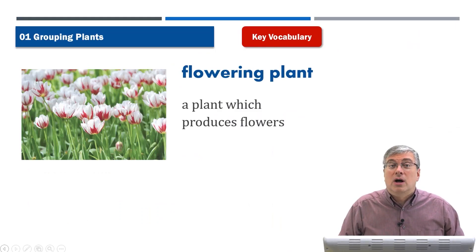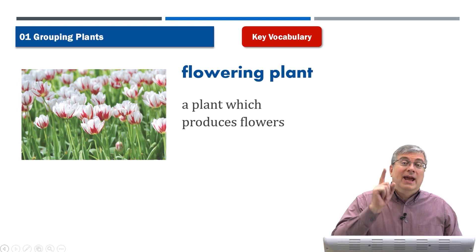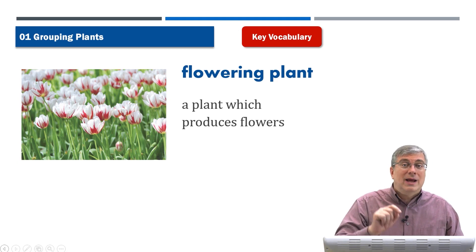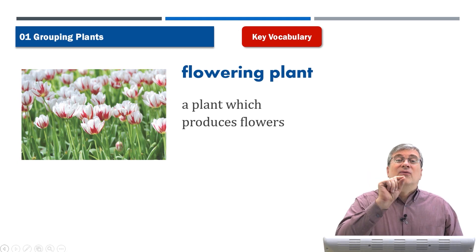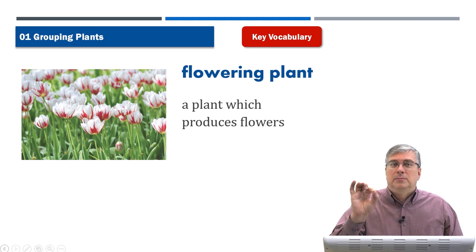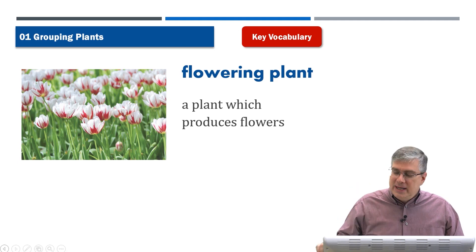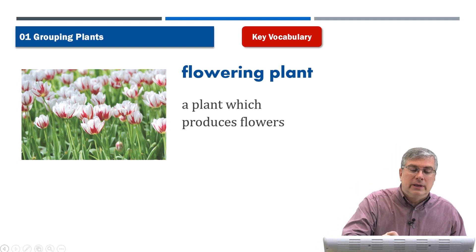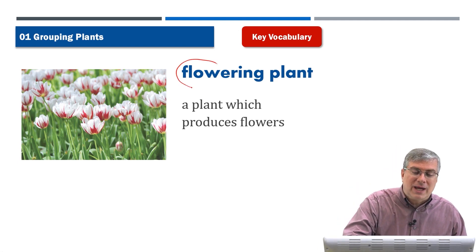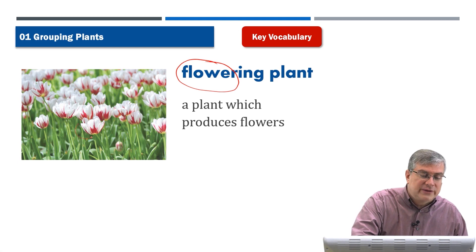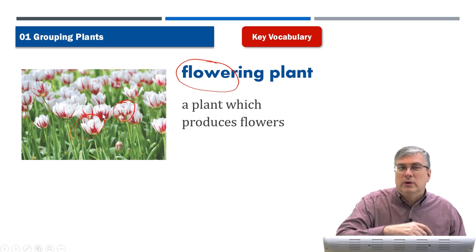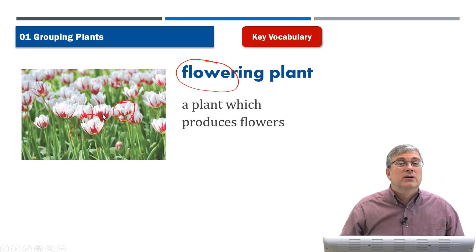As usual we start off with the vocabulary section and our first word — actually two words — is 'flowering plant.' Now you know what a flower is, right? We have a nice picture of many flowers here. Flowers come in many colors and many different kinds.